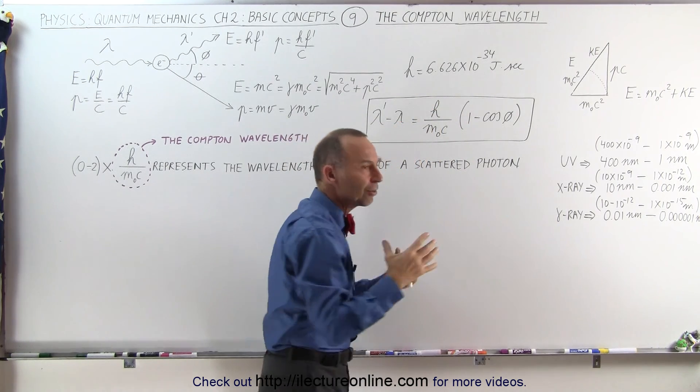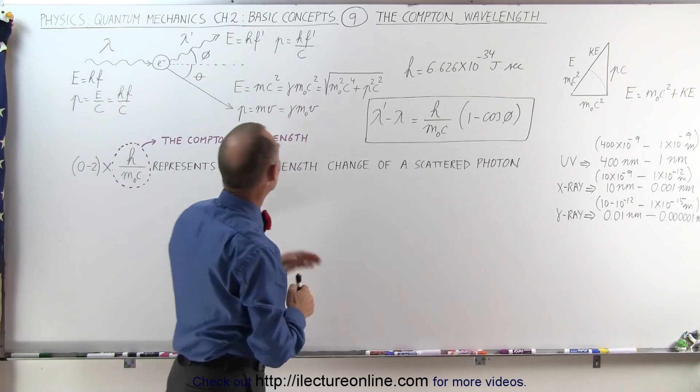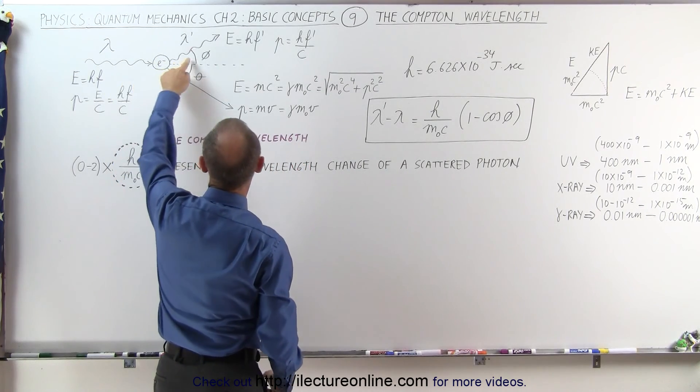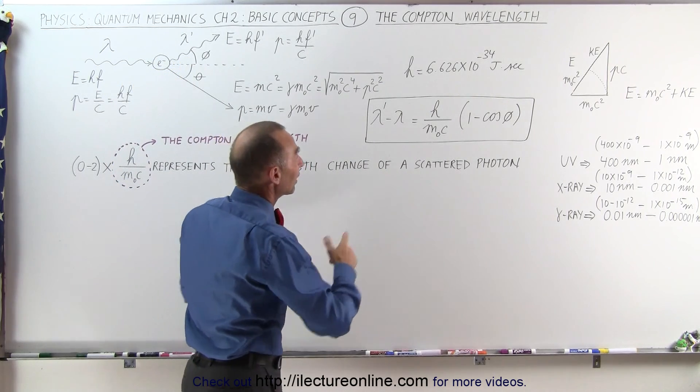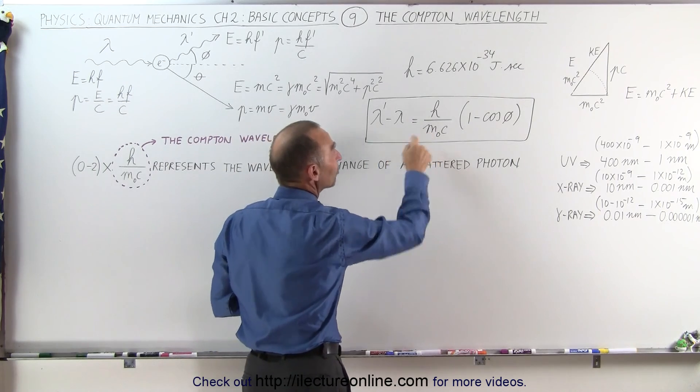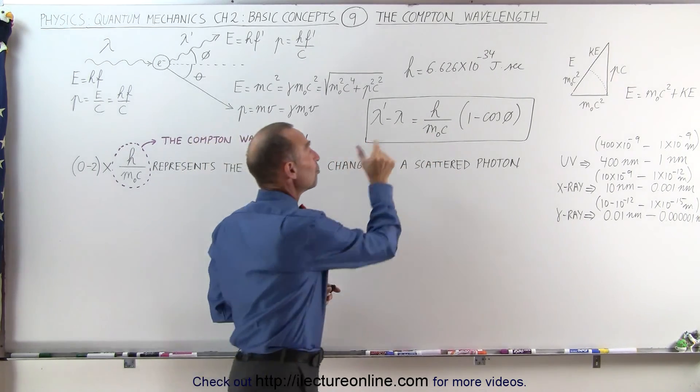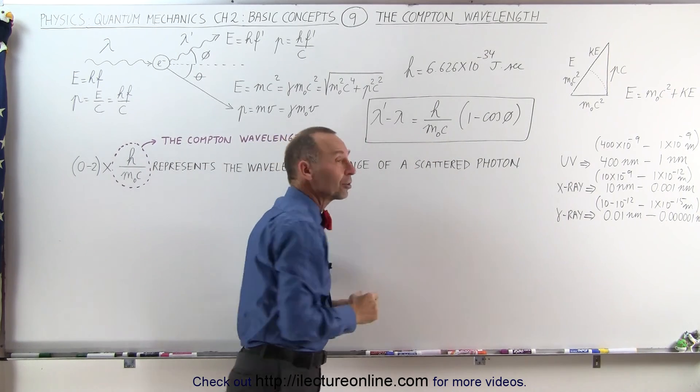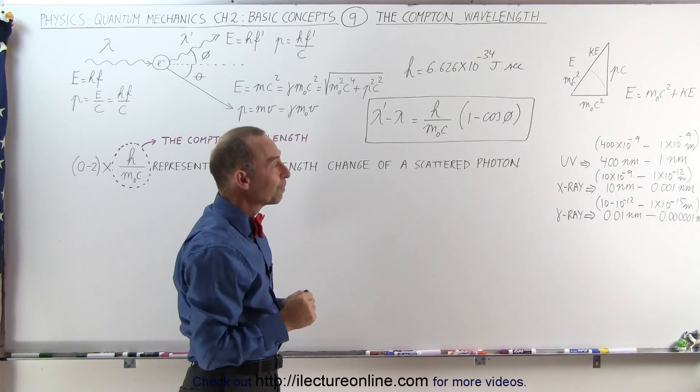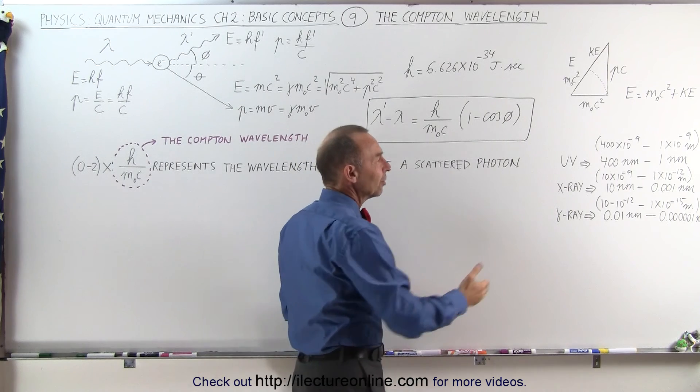The size of the difference of the wavelength between the incoming photon and the scattering photon, the difference in the wavelength does definitely depend upon the size of the particle off of which it scatters. The larger the particle, the smaller the difference. The smaller the particle, the larger the difference.